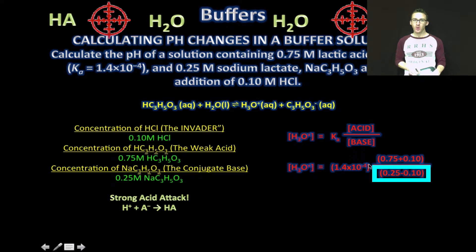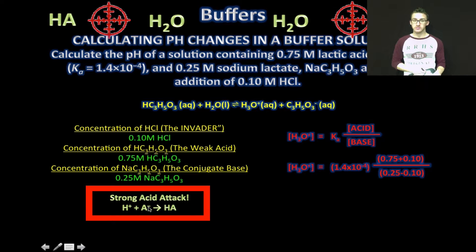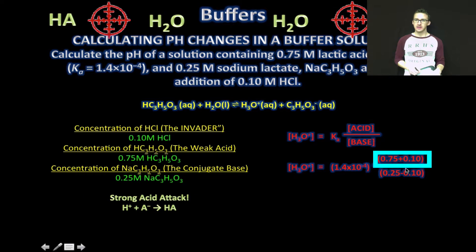But notice here what's going to happen. Because we've added 0.1 molar strong acid, 0.1 molar of our conjugate base is going to have to sacrifice its life to save the pH. So we're going to subtract that concentration from our initial concentration of weak conjugate base. And think about the equation. When that weak conjugate base sacrifices itself, it's going to form more weak acid. And so we add 0.1 molar to the original concentration of our weak acid.